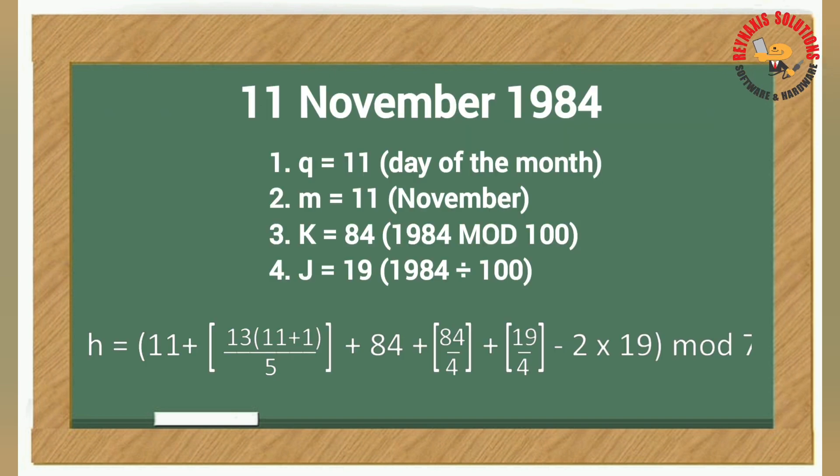Now that we have the given values for our variables q, m, k, and j, we can now proceed with substituting the letters in the formula with the values shown.